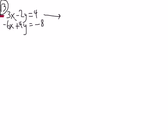So if I multiply this first equation by 2 and then add them together, then add the equations together, I know that these will cancel out.